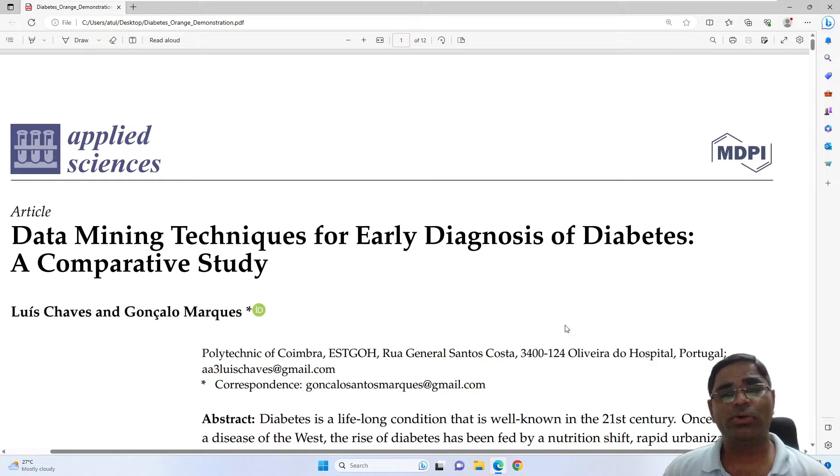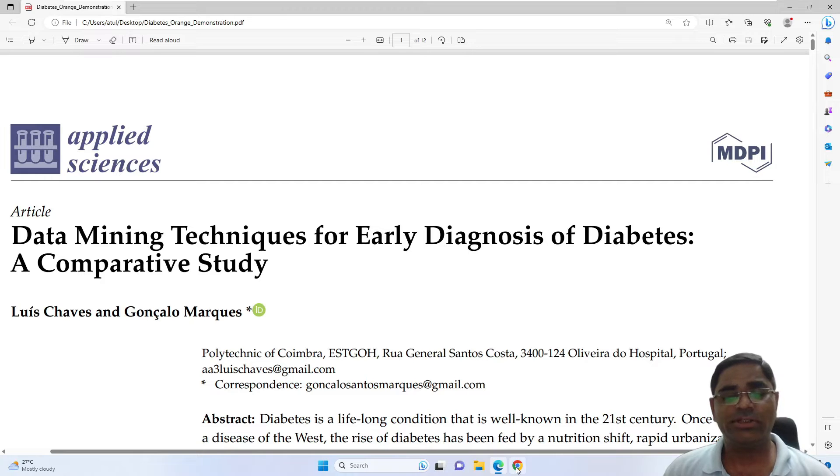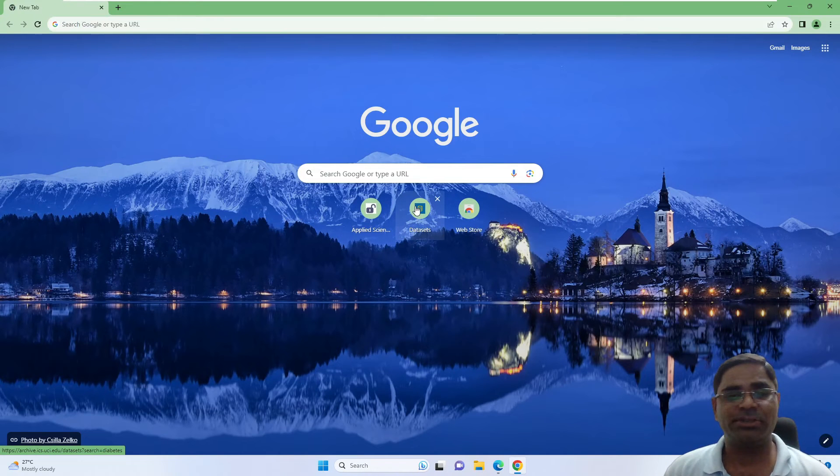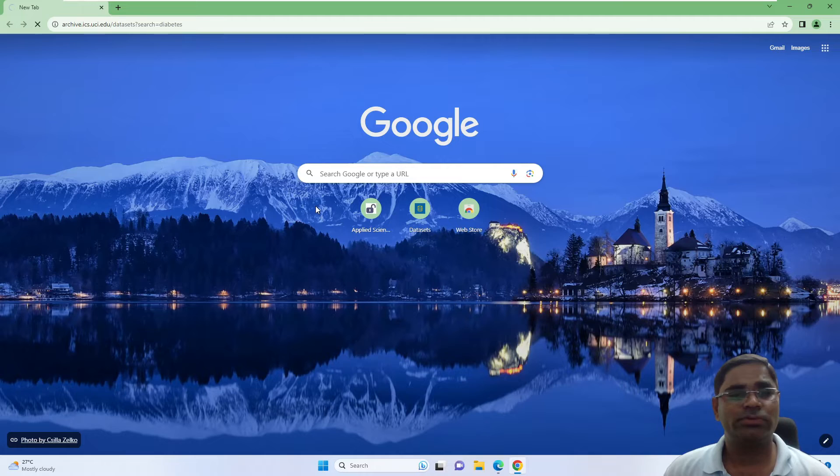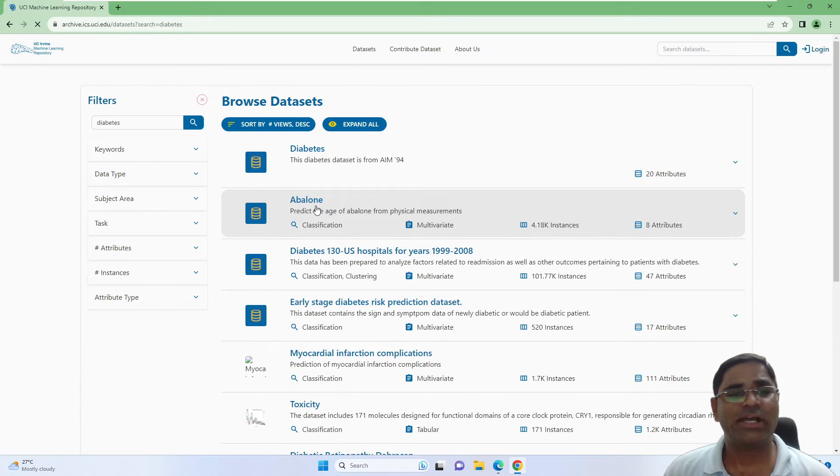As you can recall from our first video on introduction and steps involved in machine learning, the first crucial step is creating our dataset. This particular article used a public dataset that is already hosted on this website, archives of ics.uci.edu.